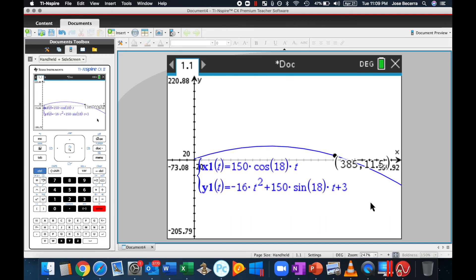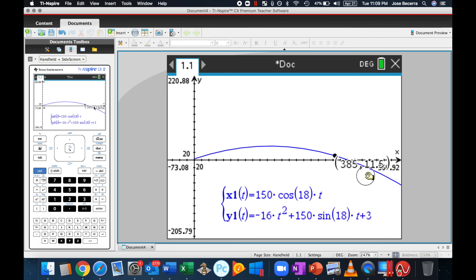Now, a cool thing about parametric equations is that this right here, this blue line, is the actual flight path of the ball. So, we can actually go ahead and see exactly where the ball is at any given moment. And we can actually go ahead and graph the wall that we are wondering if it will run into or not.